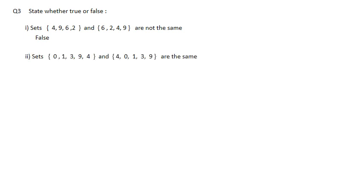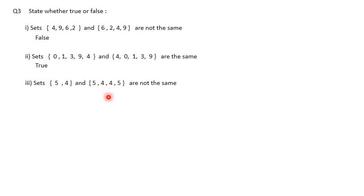Next: {0, 1, 3, 9, 4} and {4, 1, 0} - both have the same elements, so the answer is true. Next: {5, 4} and {5, 4, 4, 5} are not the same. According to our property, elements should not be repeated. If we remove repetitions from the second set, we get {5, 4} - which is the same as the first set. The statement says they are not the same, so the answer is false.